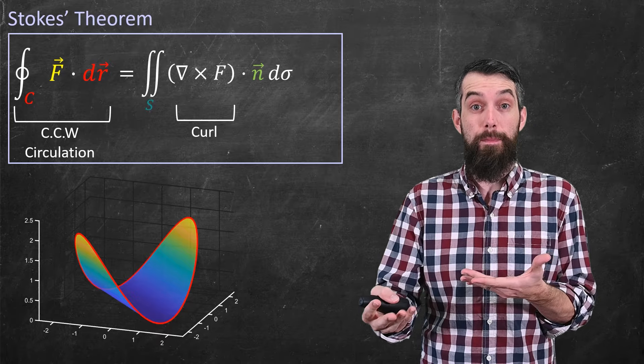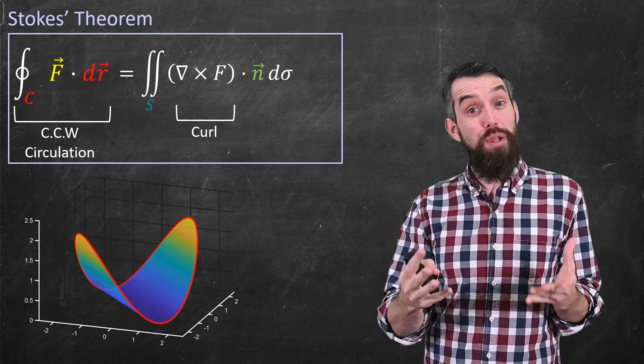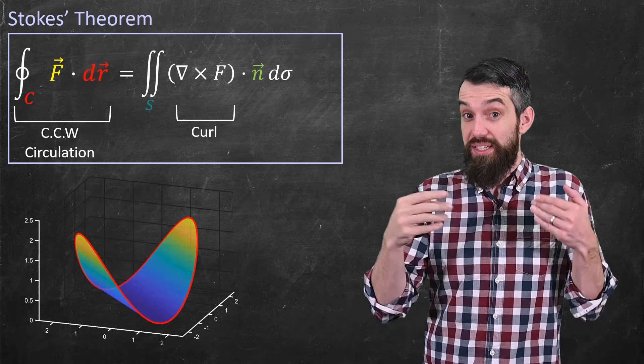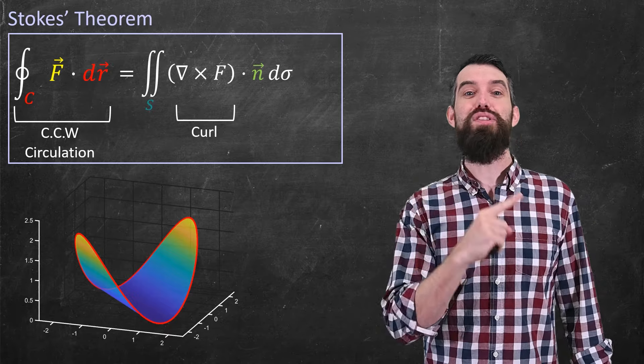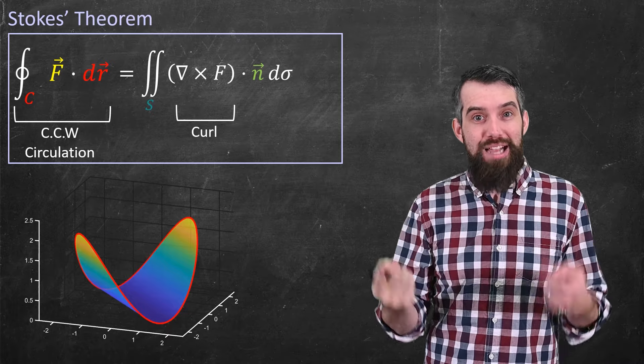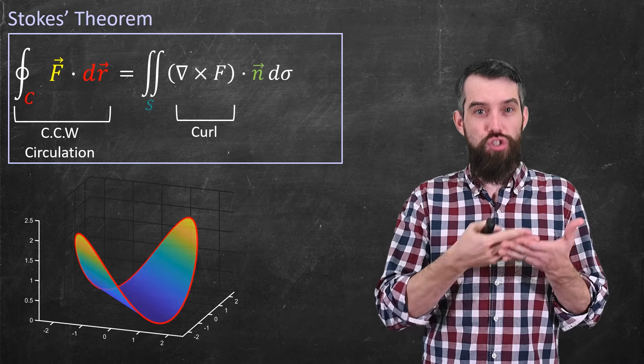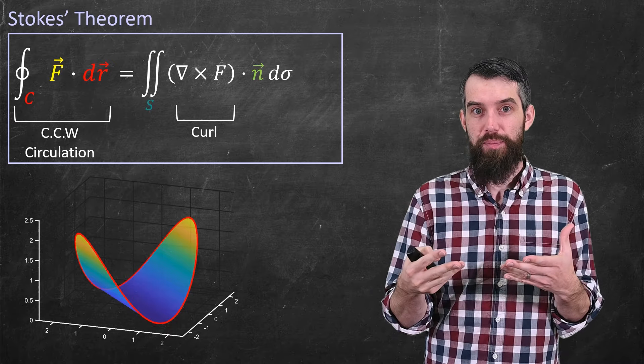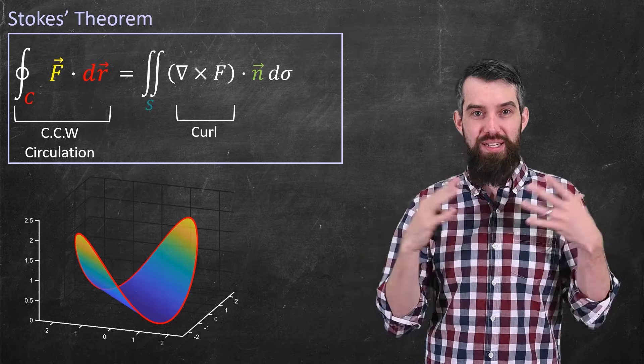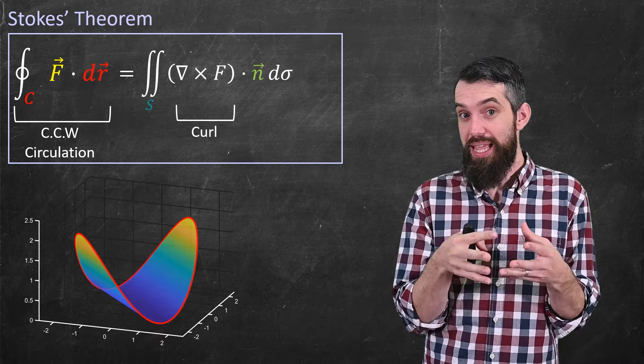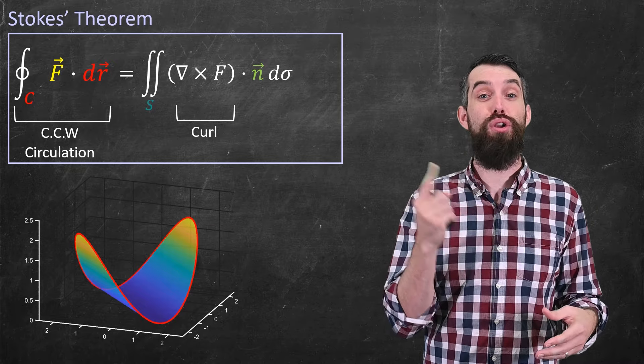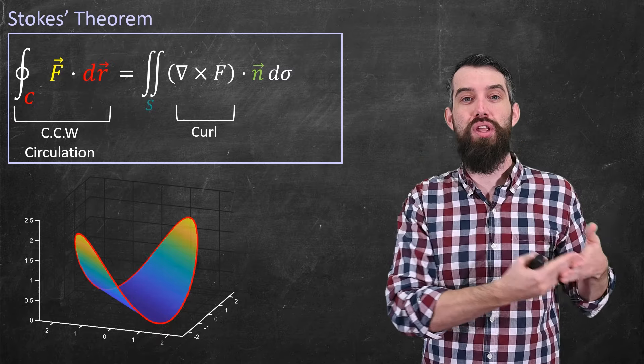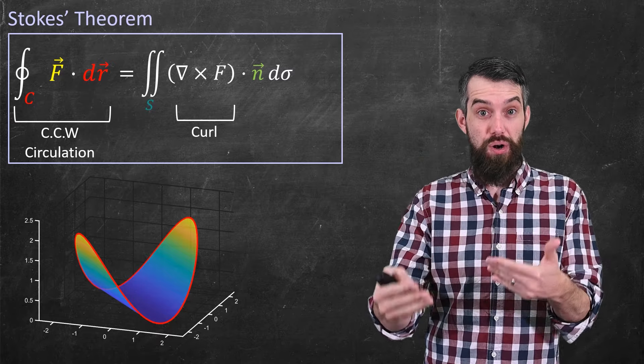But the sort of intuitive argument for why this is true is almost exactly the same. At any point in the interior of this surface, I have some curling that is measured by the curl of f dotted with n, so the curl that sort of lives inside of the surface. And then if you add up all of the tendencies to curl, everything along the inside cancels, and just leaves with the curling along the boundary, and the curling around the boundary is what causes the circulation around this boundary curve.